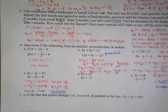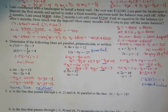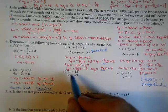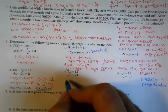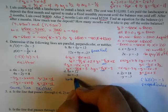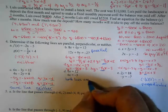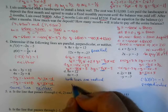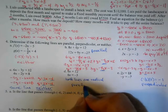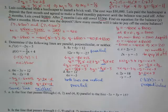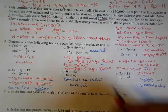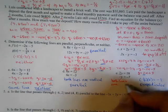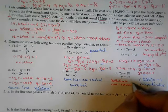Part D: there's no y — if it's just x equals something, both lines are vertical, and all vertical lines are parallel. Part E: there are no x's, so both lines are horizontal, and all horizontal lines are parallel. A little shortcut there.